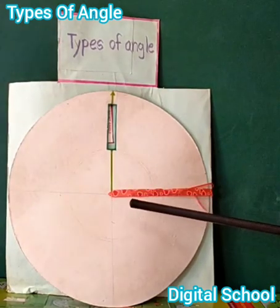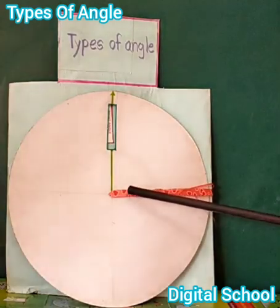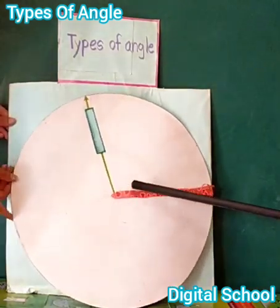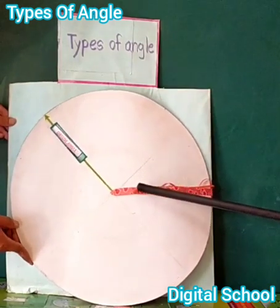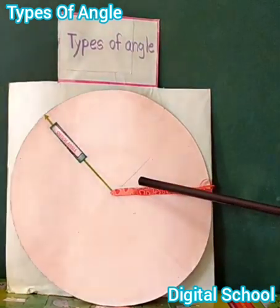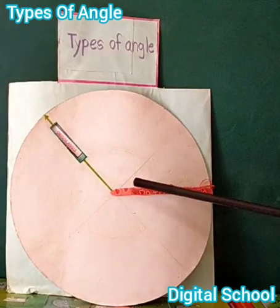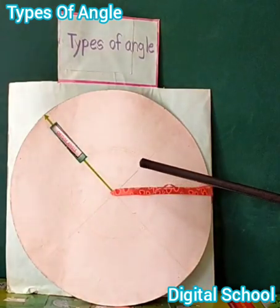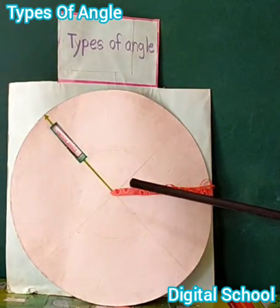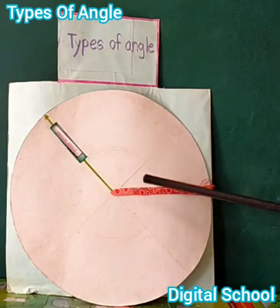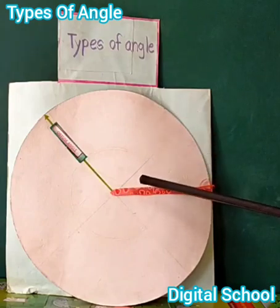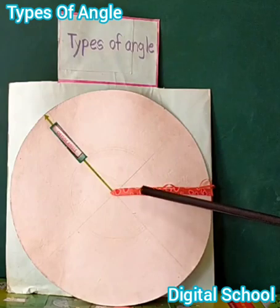Assalamu alaikum, I am Asuna. Today we will learn about types of angle. Dear friends, look at the board. This is an obtuse angle. The definition of obtuse angle: an angle which measures more than 90 degrees and less than 180 degrees is called an obtuse angle. In the figure, angle ABC is called an obtuse angle.